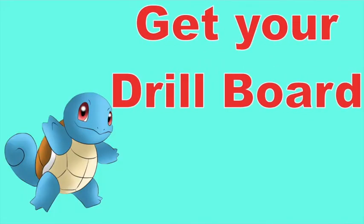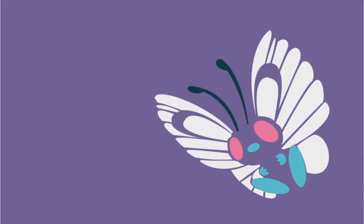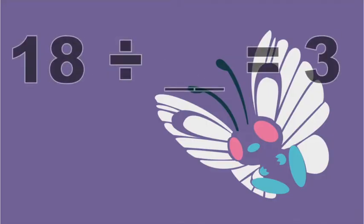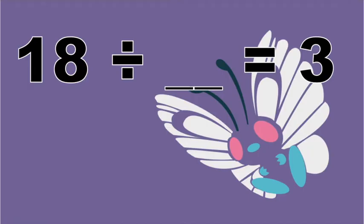Now, children, I want you to get your drill board. Using your drill board, tell me the missing number. 18 divided by blank is equal to 3. What do you think is the missing number? Very good! That is 6.